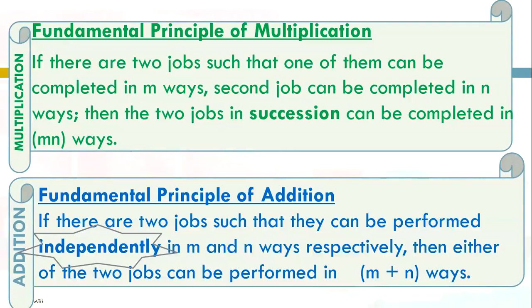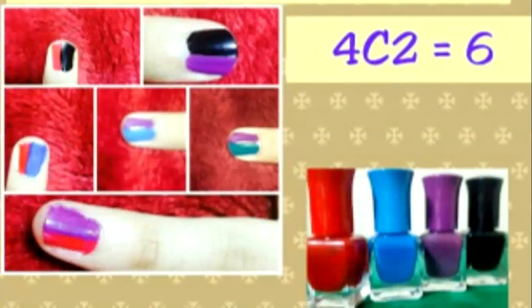If you want to complete two jobs, use the multiplication principle. If you are doing any one of the jobs independently, use the addition principle. This can be extended for any number of jobs. Now let us take one example and see how to apply it.